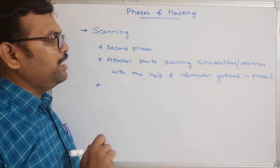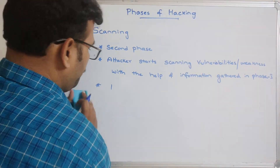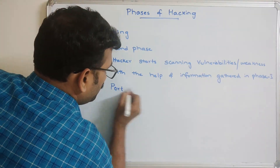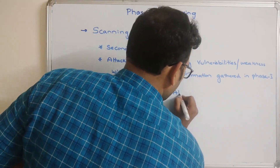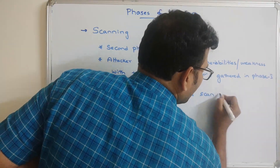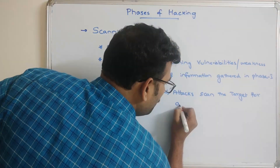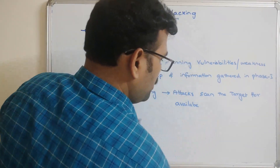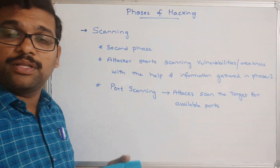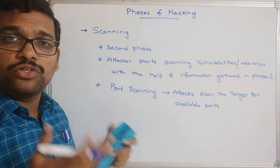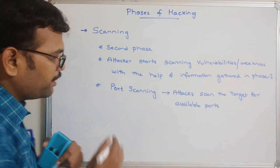There are three types of scanning. The first is port scanning, where the attacker scans the target system for available open ports, because through those ports the attacker will later exploit payloads.